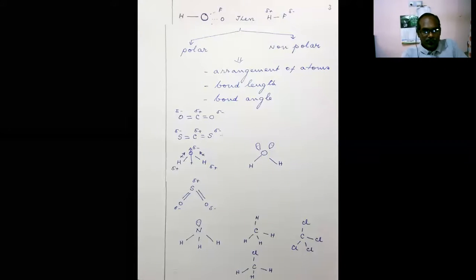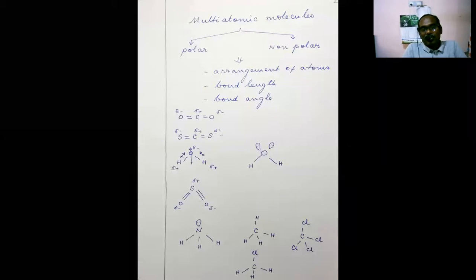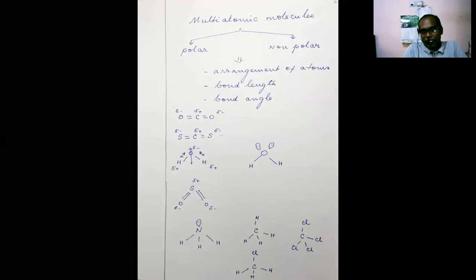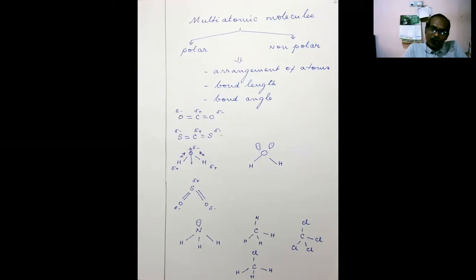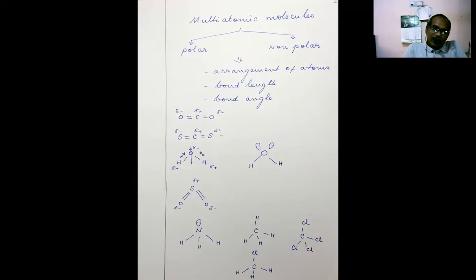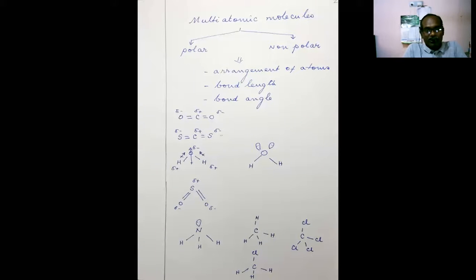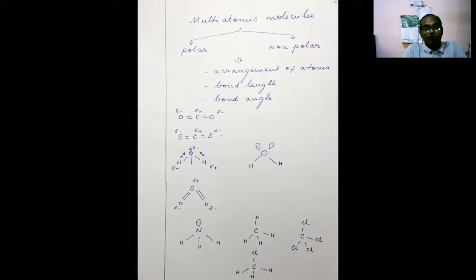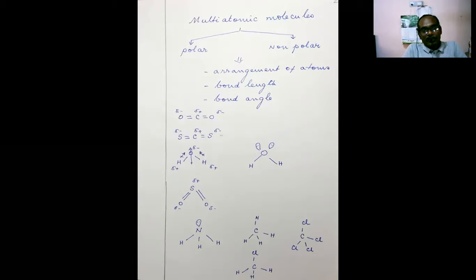This is the slide from the last class. A multi-atomic molecule may be polar or may not be polar. The polar or non-polar nature of multi-atomic molecules depends upon three important factors: namely the arrangement of atoms, the bond length, and the bond angle. In general, polarity mostly depends upon the symmetry of the molecule.